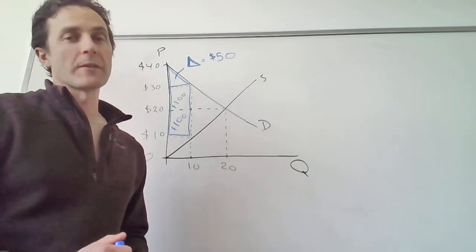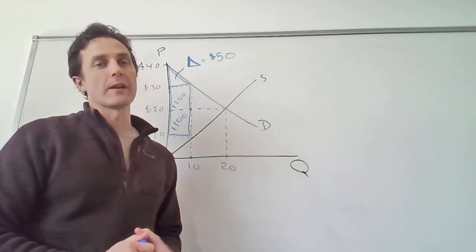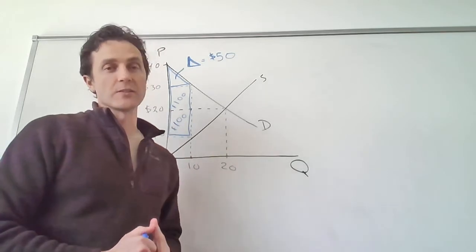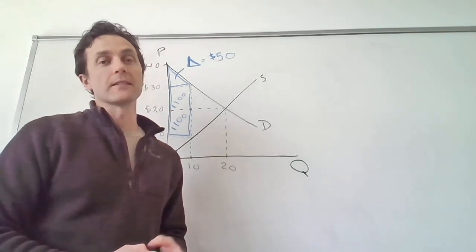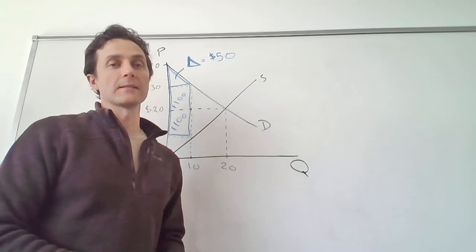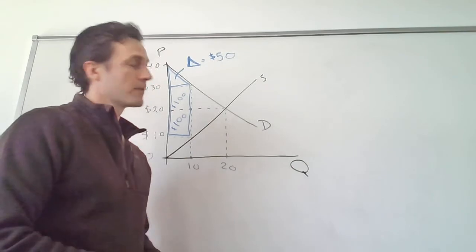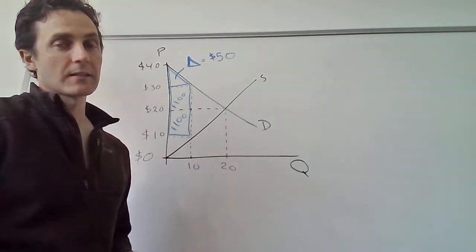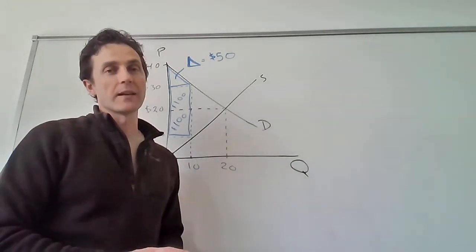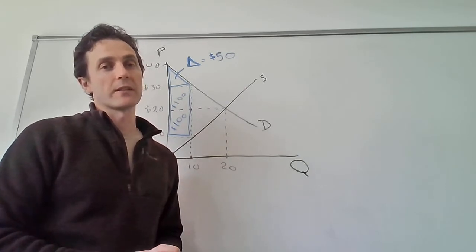The first thing you always want to ask yourself when analyzing a market with a price ceiling or price floor is: is this price ceiling or price floor binding? A price ceiling is binding if it is set below the equilibrium price, and a price floor is binding if it is set above the equilibrium price.